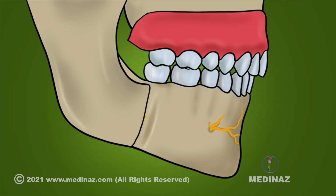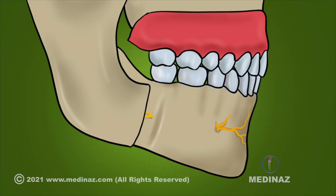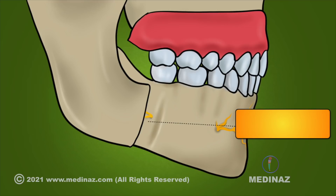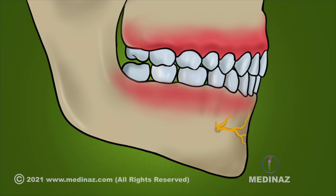If your jaw is abnormally placed or if you have an abnormal jaw, your orthodontist may plan a jaw reconstruction surgery. This is done mainly for aesthetic purposes. In such a situation, your wisdom teeth will be removed.